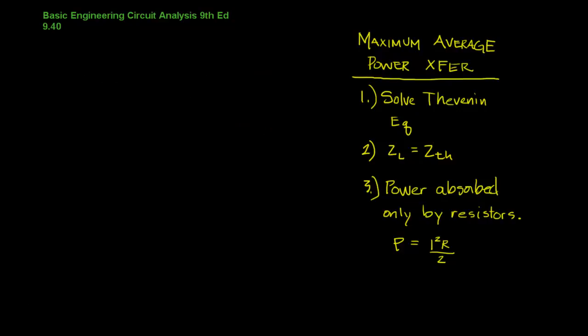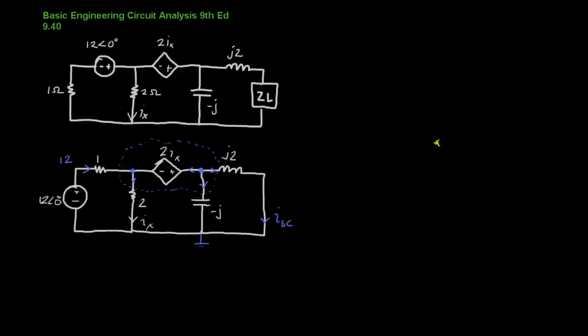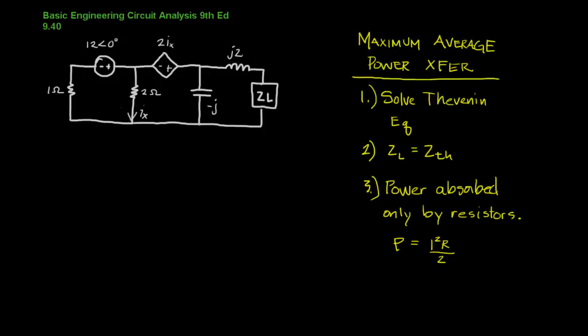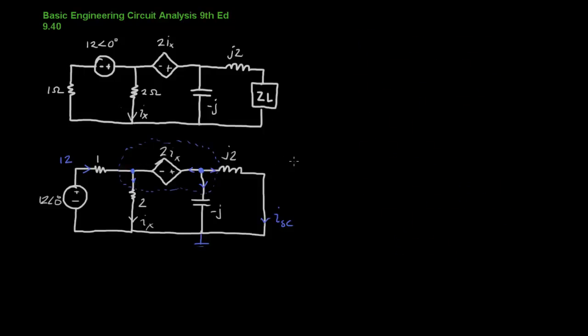Let's start by drawing our Thevenin equivalent circuit. Notice that we have a dependent and an independent source here, which means we're going to have to use the method of calculating, removing the load and then calculating the open circuit voltage and the short circuit current. We're going to do that by redrawing the circuit with the load removed and we'll short across the load and then look for the short circuit current.